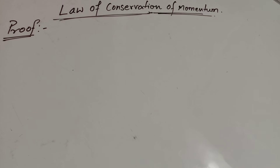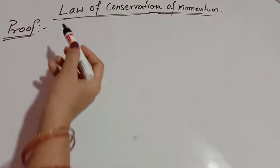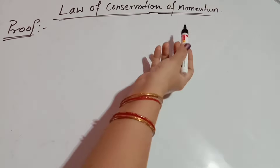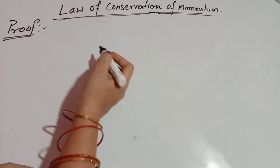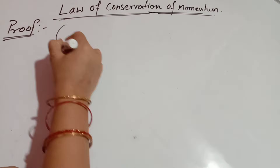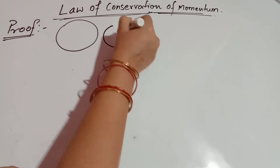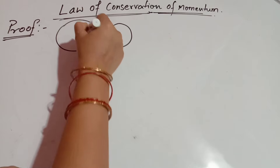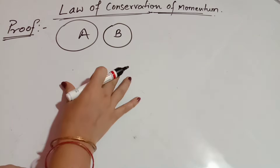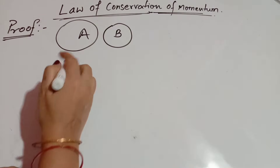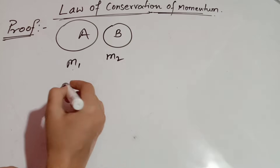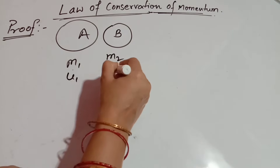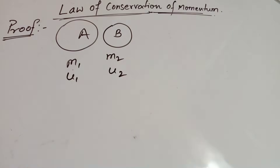In this video, we discuss the law of conservation of momentum and the proof of the law of conservation of momentum. Suppose we consider two objects A and B, having mass M1 and M2, and initial velocity U1 and U2.